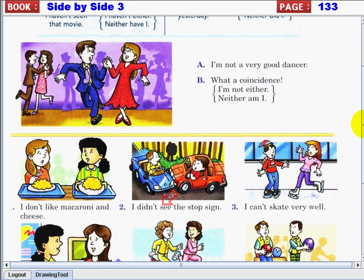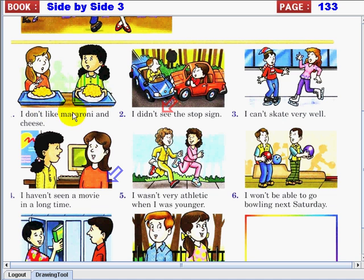All right, now let's have another one. I'm not a very good dancer. What a coincidence! I'm not either, or neither am I. Okay, I don't like macaroni and cheese. All right, number two, I did not see the stop sign. Your answer.